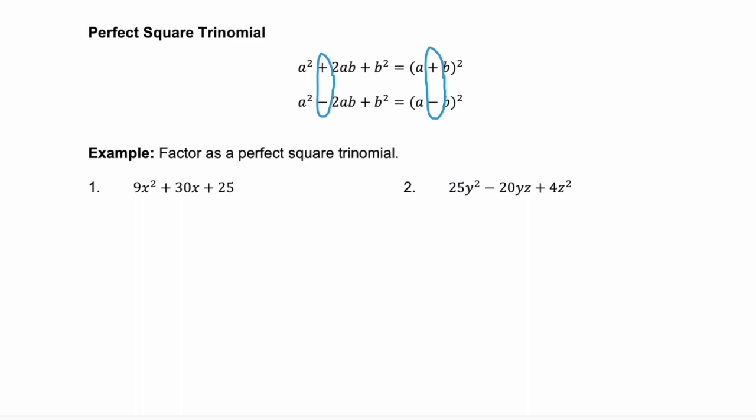Let's look at an example. Example one, 9x squared plus 30x plus 25. 9x squared, we know that that is the same as 3x squared. And 25, our last term, is 5 squared. So now we need to see, is that middle term, 30x, the same as our first term times our last term times 2. And it is. 2 times 3x times 5 is 30x. So this polynomial is a perfect square trinomial. And it factors to our first term, 3x, plus our last term, 5, that whole binomial squared.